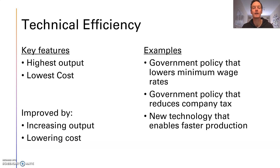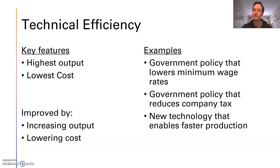We've got some examples here of events that would improve technical efficiency. The first one is a government policy that lowers minimum wage rates. You might think that's a terrible thing if people are earning less, but if we're just looking at technical efficiency — the allocation of resources to achieve highest output and lowest cost — this lowers cost for businesses and therefore will improve our ability to achieve technical efficiency. Secondly, a government policy that reduces the amount of tax that businesses need to pay will lower their cost of production and move them closer to technical efficiency.